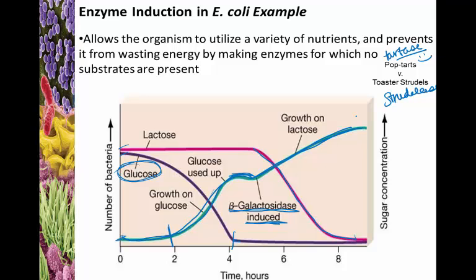This is what we mean when we talk about organisms being adaptable. E. coli is a facultative lactose metabolizer — normally it prefers glucose, but it can survive on lactose if needed. A major bonus to this system is that it prevents the waste of energy. Making proteins is expensive, costing on average about 2,000 ATP per protein. So instead of making all enzymes at once and then inhibiting them, we save energy by transcribing and translating them only as needed.